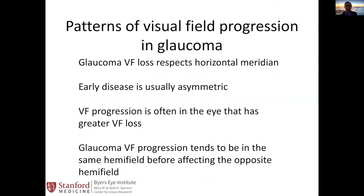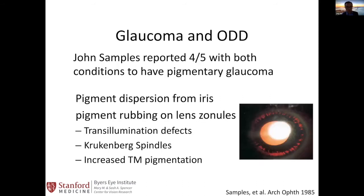The rules we observe for visual field defects in glaucoma are: first, glaucoma respects the horizontal meridian, occurring on the superior or inferior half first before involving both. Second, early glaucoma is usually asymptomatic — it took time to recognize glaucoma's pre-perimetric stage. Third, visual field often worsens in the eye that already has more vision loss. Fourth, visual field loss occurs within the same hemifield before progressing to the other hemifield.